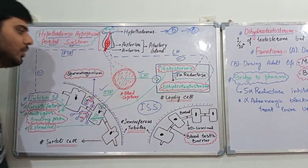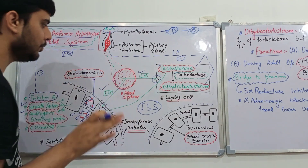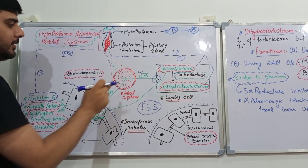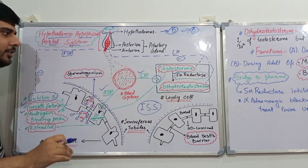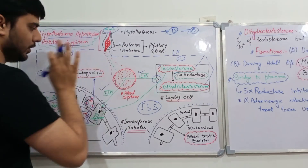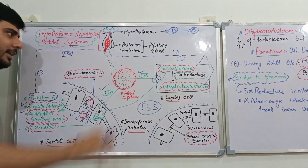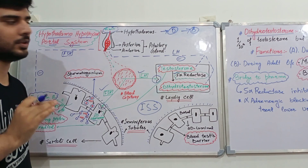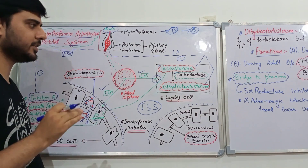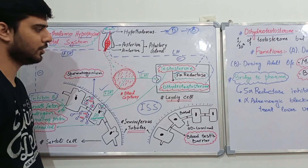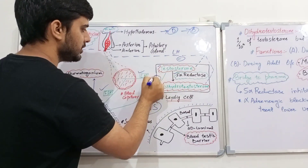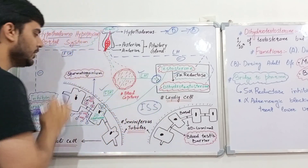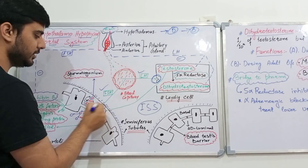Blood capillaries are present within the interstitial space. That blood capillary carries the hormones — luteinizing hormone and follicle-stimulating hormone. These two hormones are peptide hormones, so their receptors will obviously be present on the surface of the cell. The receptor for the luteinizing hormone is present on the surface of the Leydig cells, while the receptor for the follicle-stimulating hormone is present on the Sertoli cell.